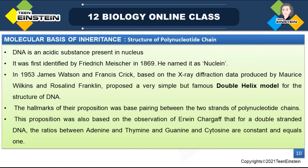DNA is an acidic substance present in the nucleus. It was first identified by Miescher in 1869, and he named it 'nuclein' — referring to the acidic substance from the nucleus.